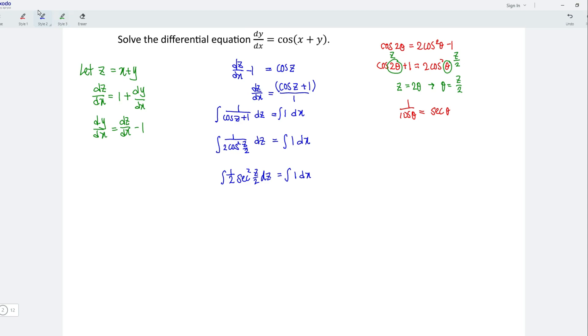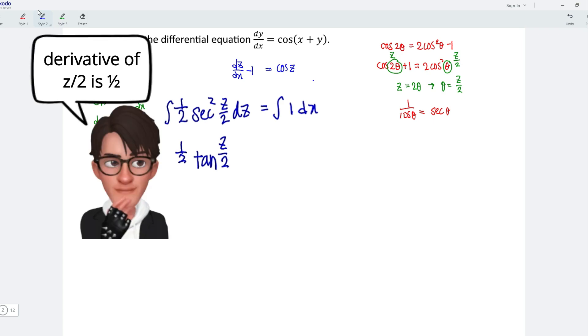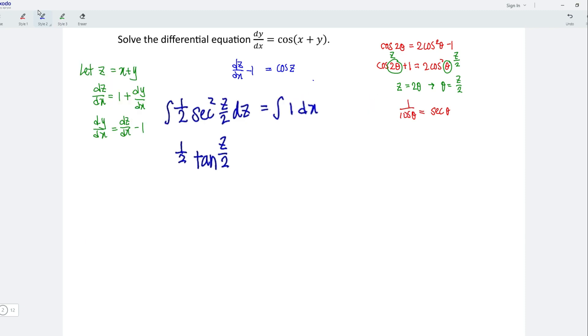When applying integration, the coefficient of the variable should remain exactly the same. When we integrate secant square, we obtain tangent, angle remains z over 2. When we differentiate z over 2, we obtain 1 over 2. And then multiply with the coefficient of the variable. But then this is integration.